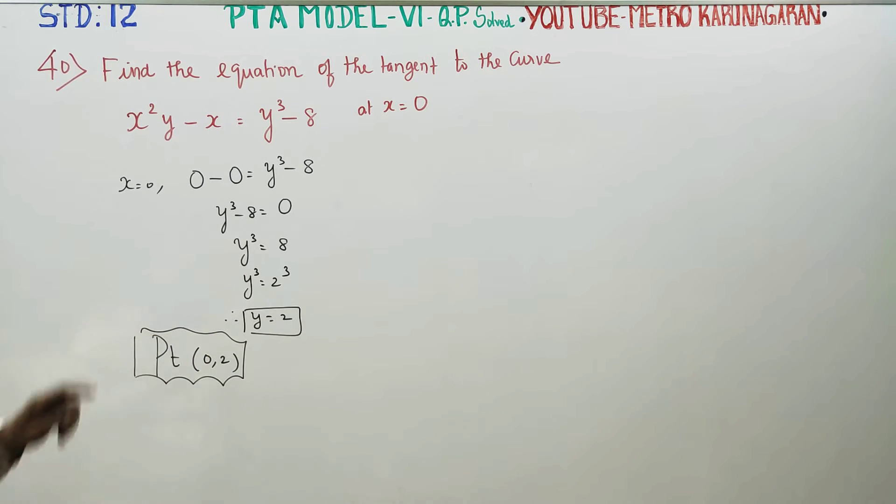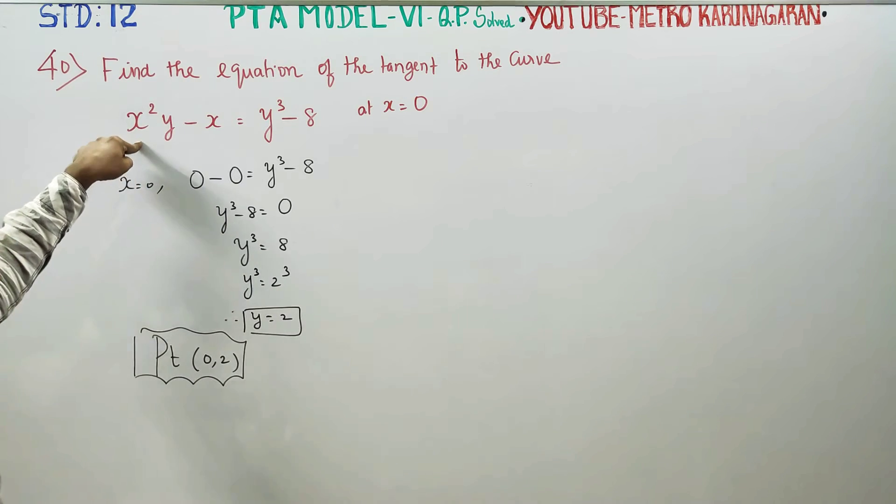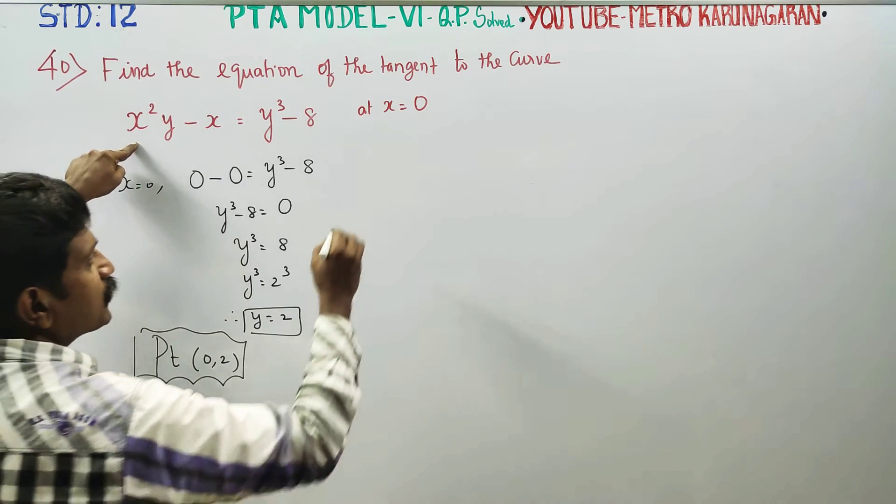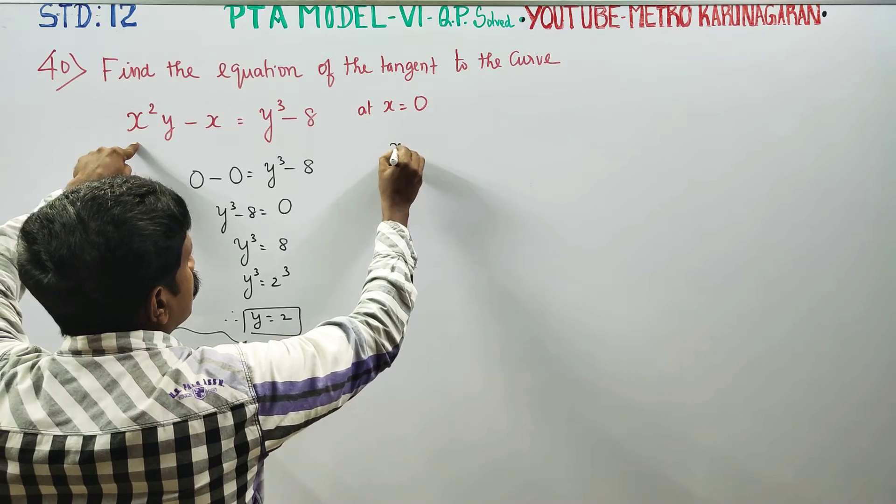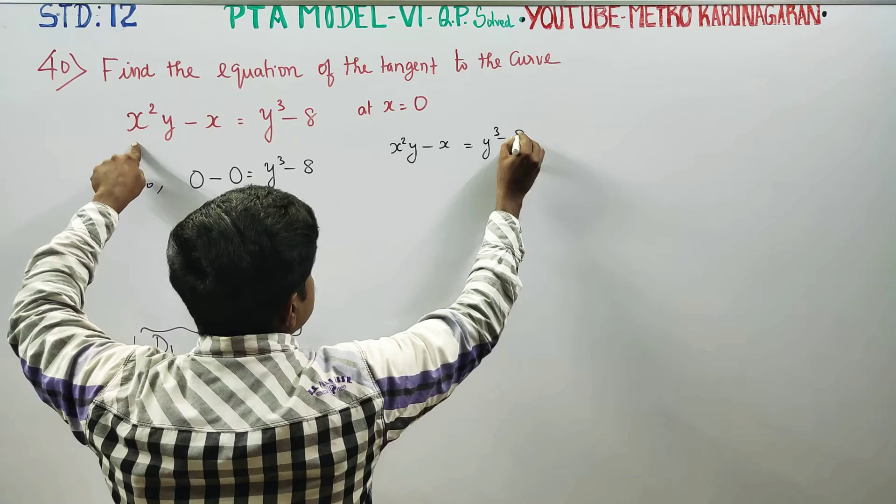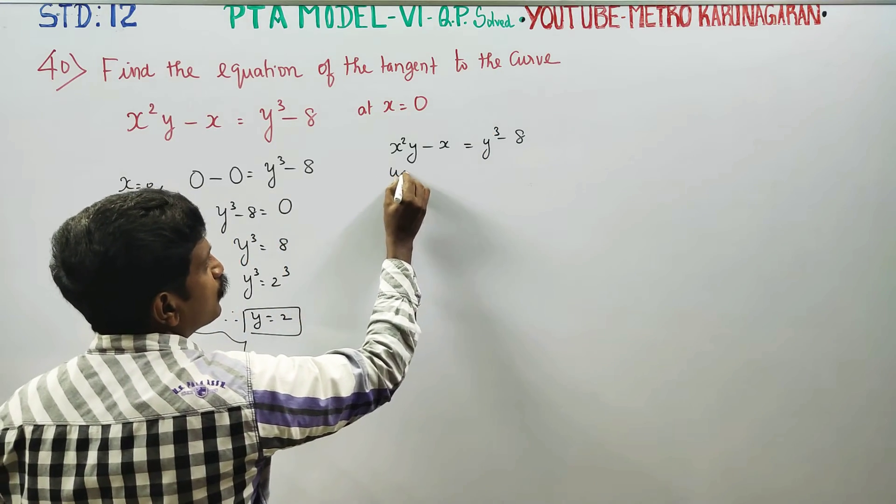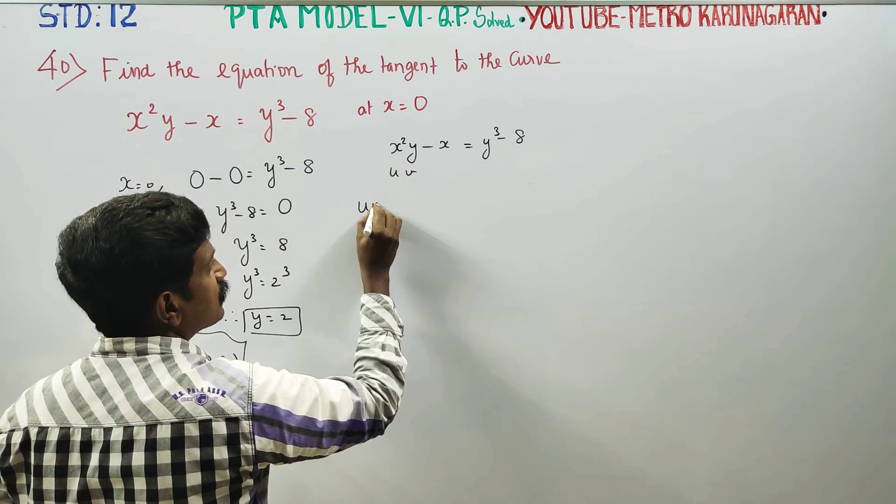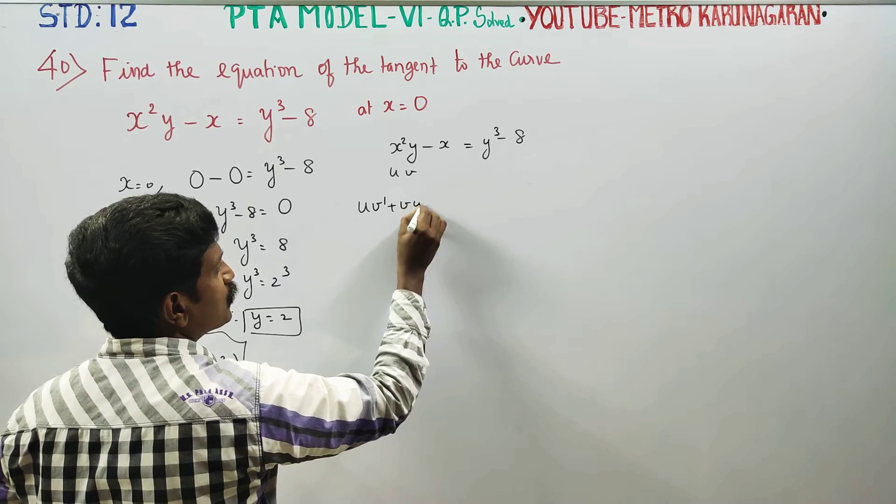After finishing this, I am going to differentiate this to find the slope. You can differentiate the curve x squared y minus x is equal to y cube minus 8. If we differentiate this, we use UV formula.